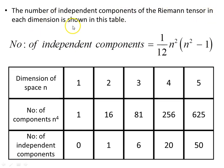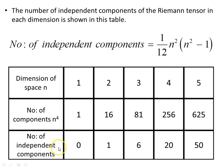The number of independent components of the Riemann tensor in each dimension is shown in a table. The formula is one twelfth n squared times n squared minus 1. The total number of components is n to the fourth power — since there are four indices each taking n values — giving 1, 16, 81, and 256 for n equals 1, 2, 3, and 4. The number of independent components is 0 in one dimension, 1 in two dimensions, 6 in three dimensions, and 20 in four dimensions.